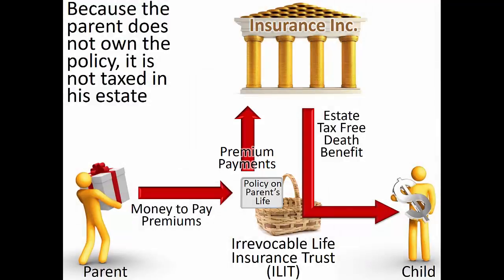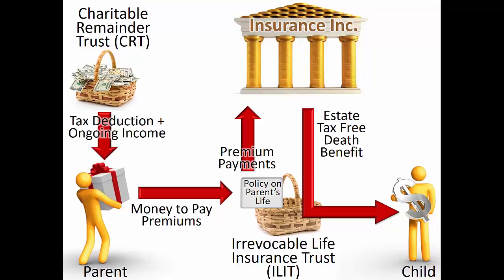By using an ILIT, the parent can establish rules for precisely where and how the money will be distributed. Because the child does not own the ILIT, the child's creditors, lawsuits, or divorce often cannot reach the ILIT assets. Although the parent cannot continue to directly control the ILIT after its creation, the parent can establish all rules that the ILIT trustee must follow in purchasing, paying for, and distributing the proceeds from the life insurance policy. This high level of control, without risk from potentially interfering family conflicts, is often attractive to those planning their estates. The ILIT is not, by itself, a charitable planning technique. Instead, the ILIT often serves as an attractive addition to charitable planning.